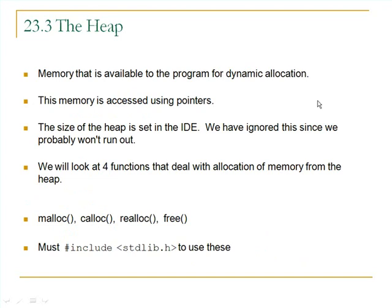Now let's talk about the heap. The heap is a chunk of memory available to your C program for dynamic allocation. You can go out and get a block of memory off the heap whenever you need it, and this memory is accessed by pointers into the heap. The size of the heap is also set in the IDE, and we just have to understand that the heap is a block of memory available to us.